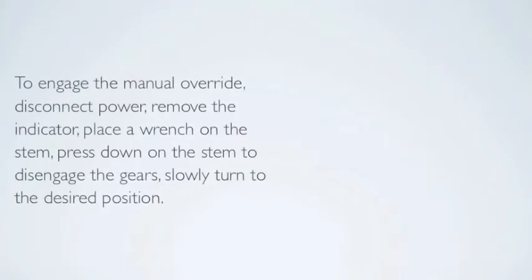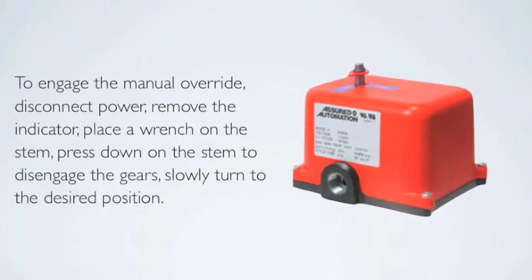To engage the manual override, disconnect power, remove the indicator, place a wrench on the stem, press down on the stem to disengage the gears, and slowly turn to the desired position.